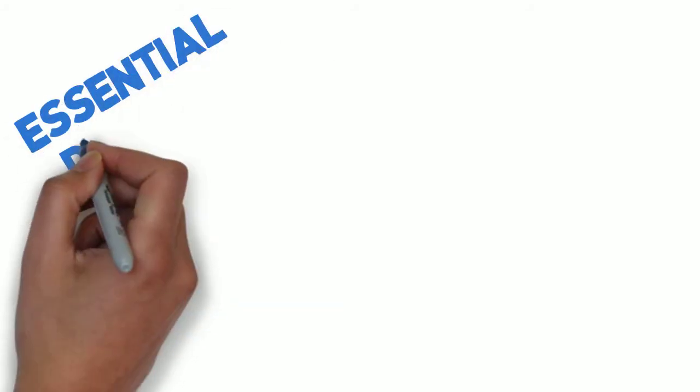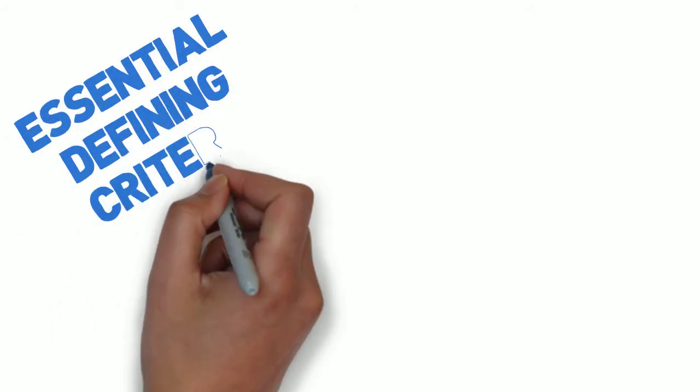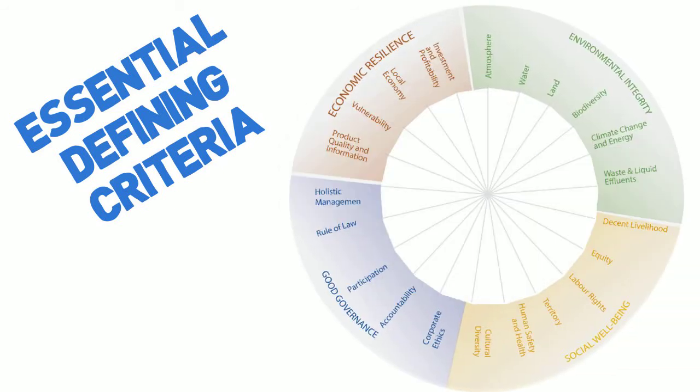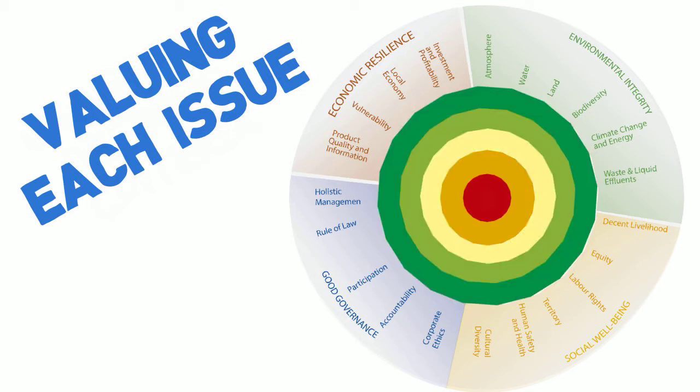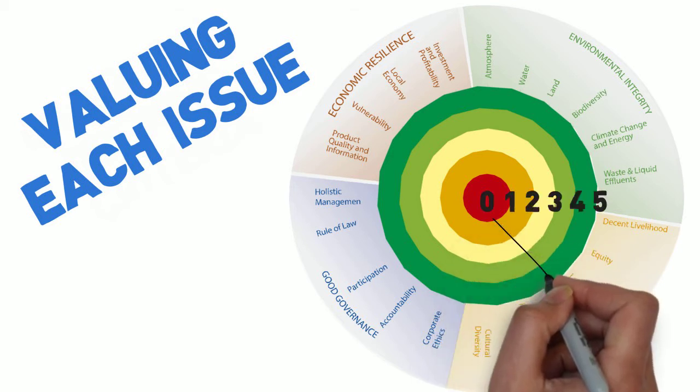In turn, each dimension is measured by essential defining criteria, valuing each issue as bad, fair, acceptable, good, and very good, and assigning it a score from 0 to 5 and a color from red to green.